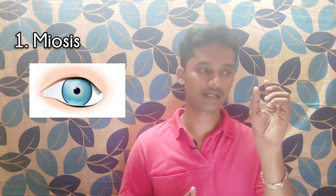The first term is miosis. Miosis means constriction of the pupil. When the muscles of the pupil are contracted, the pupil becomes small — this is called a pinpoint pupil. This condition is called miosis.